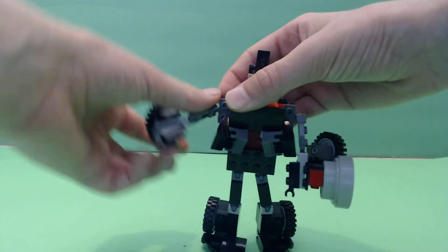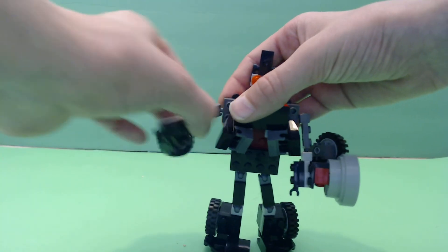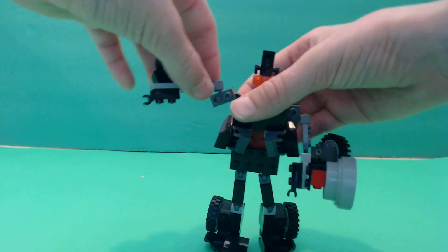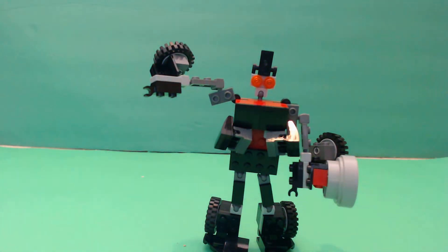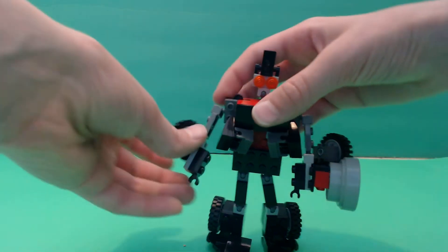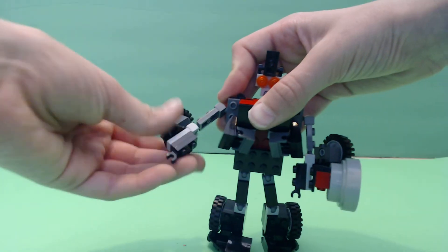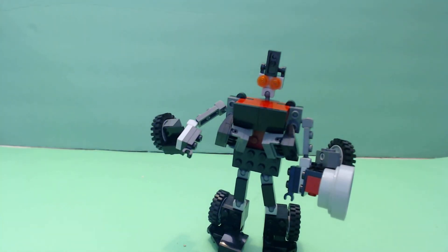And so then for the arms, you got a ball joint here, so 360 then. Also you get this little range of movement, which is kind of weird. Because then it looks like he's breaking his arm. And then he has a little clip to hold stuff.